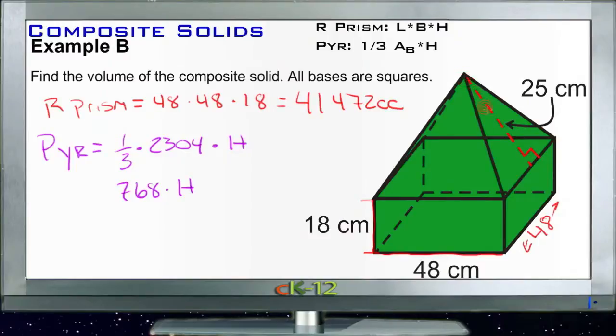We need to find this height first, because all we have is our slant, right? So we need to find the height of this pyramid. It's going to be a triangle whose base is half of the distance across the top of the box, so it's going to be 24 centimeters. And it's going to be 25 centimeters down the hypotenuse, so we can solve for our missing side b, the height, using the Pythagorean theorem.